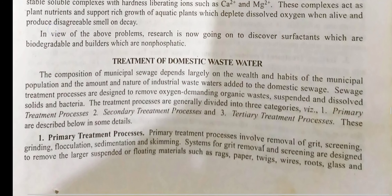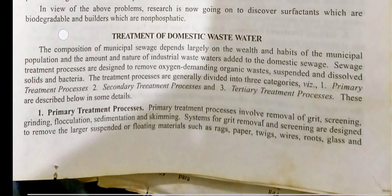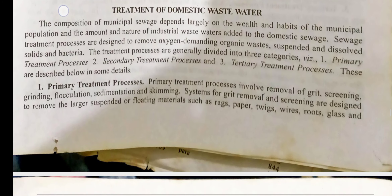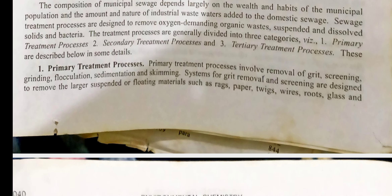Treatment of domestic waste water. The composition of municipal sewage depends largely on the wealth and habits of the municipal population and the amount and nature of industrial waste water added to the domestic sewage. Sewage treatment processes are designed to remove oxygen-demanding organic waste, suspended and dissolved solids, and bacteria. The treatment processes are generally divided into three categories: primary processes, secondary treatment processes, and tertiary treatment processes. Primary treatment involves removal of grit, screening, grinding, flocculation, sedimentation and skimming.